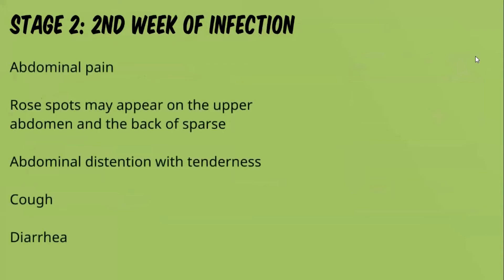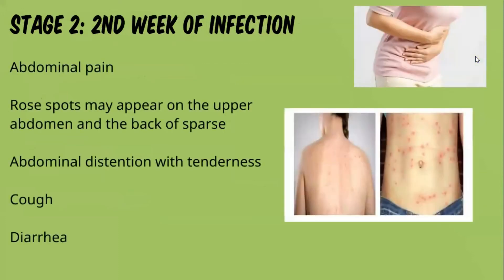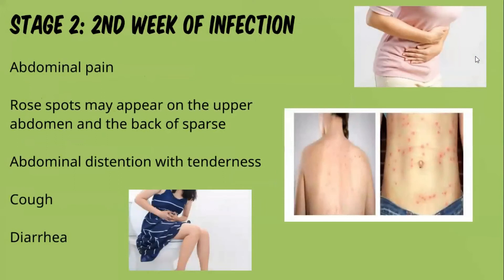Stage two, or the second week of infection, is where we see abdominal pain as well as rose spots, which may appear on the upper abdomen and back. There is abdominal distension with tenderness, cough, and diarrhea. Rose spots are usually about one to five millimeters in size.